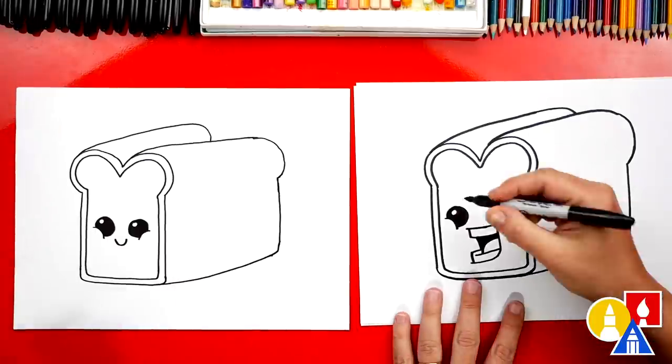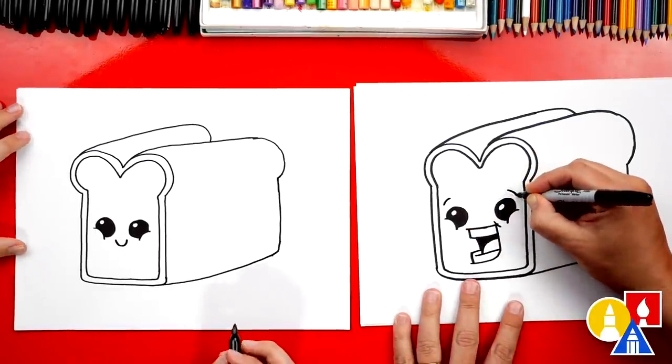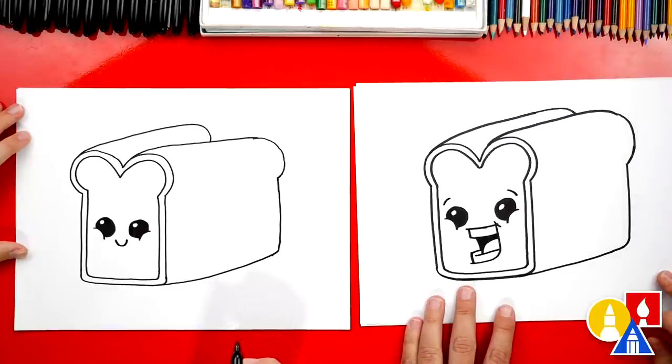All right, Jack, we did it. I'm gonna add two little eyebrows. All right, Jack, we did it. We finished drawing our loaf of bread, our funny loaf.